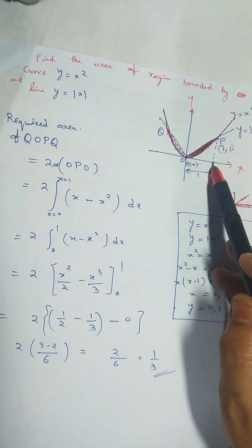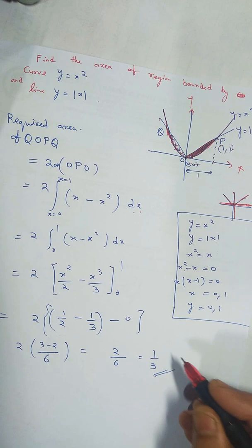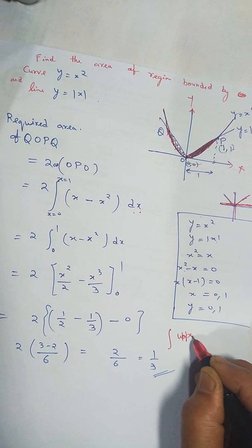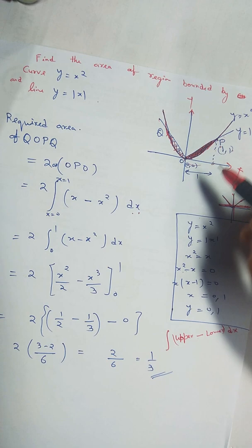Okay, so I have put here x=0, x=1. And we are integrating with respect to x. Then we have to apply this formula: integration of upper side minus lower side graph times dx. So upper side graph is this one, |x|.